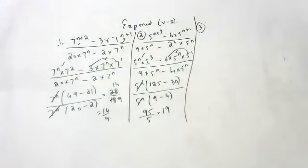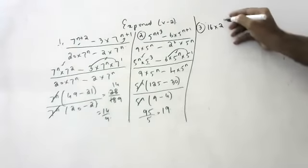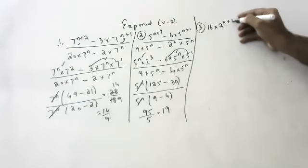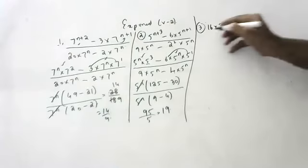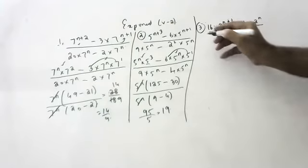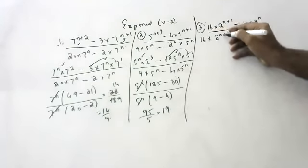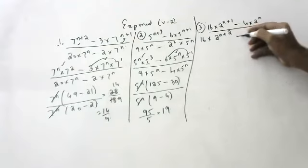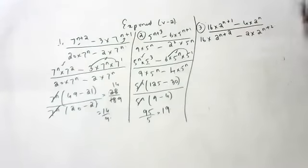If anyone is interested, you can try the next one. The next question is: 16 into 2 to the power n plus 1, minus 4 into 2 to the power n, divided by 16 into 2 to the power n plus 2, minus 2 into 2 to the power n plus 2. Who will take this?